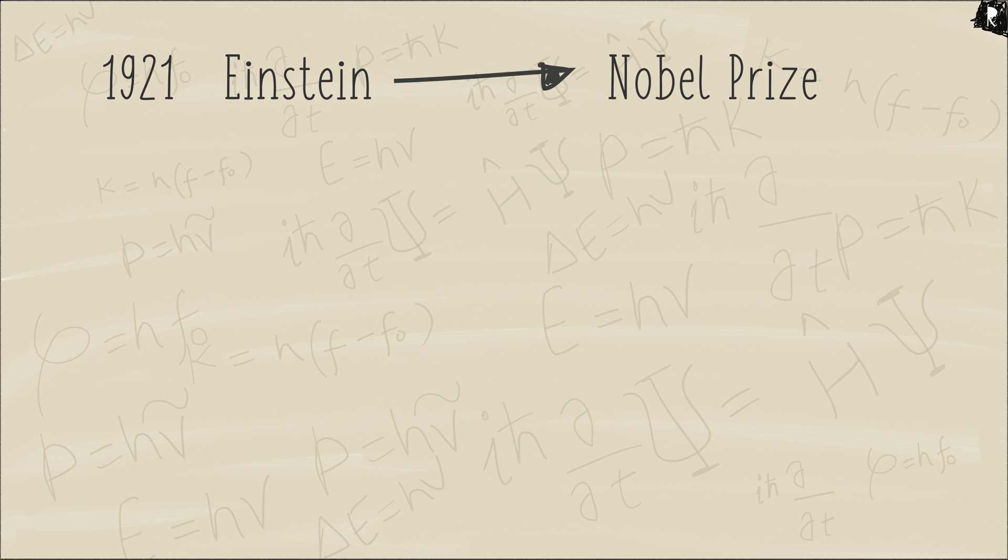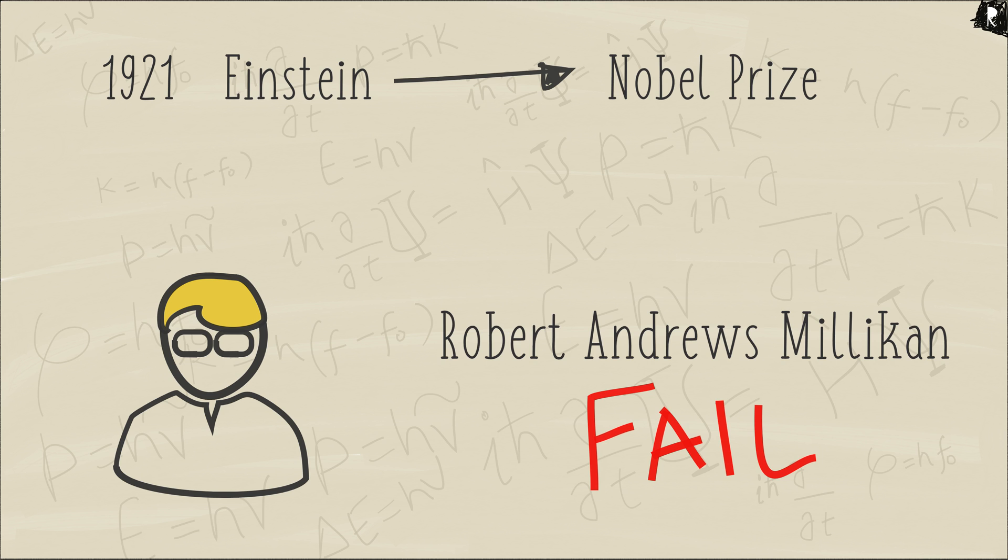In 1921, Einstein was awarded the Nobel Prize for his discovery of the law of the photoelectric effect. But what did Robert get after spending 10 years of his life? The failure-wrapped-in-success story is,